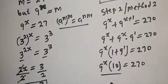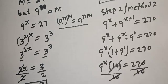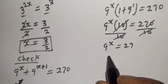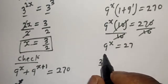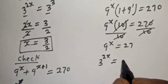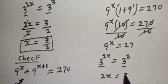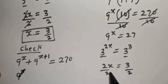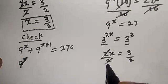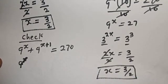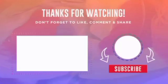Dividing both sides by 10, 9 raised to power s equals 27. Now 9 raised to power s is 3 raised to power 2s, equal to 3 raised to power 3. They have the same base. So 2s equals 3. Dividing both sides by 2, s is equal to 3 over 2. This is the final answer using Method 2. If you enjoyed the class, please don't forget to like, share, comment and subscribe. Thank you.